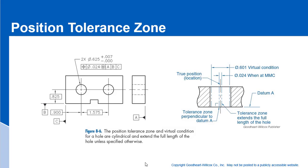When we look at the datum reference frame here, we've got three planes — datum A, datum B, and datum C — that establish our frame of reference for the feature control frame for this position tolerance. A is the primary datum because that's pretty much where the part sits and where the holes are going to be penetrating that surface.